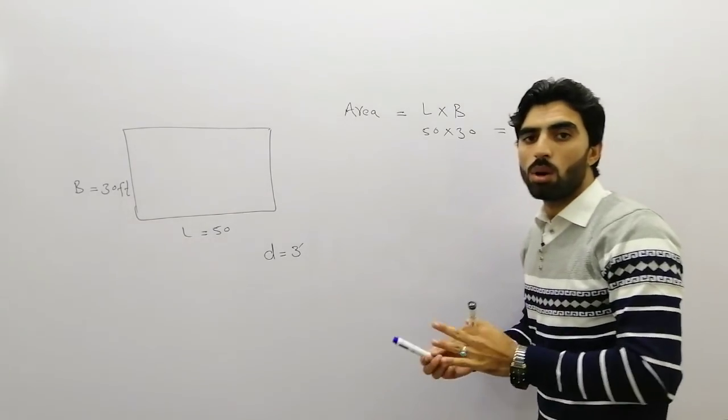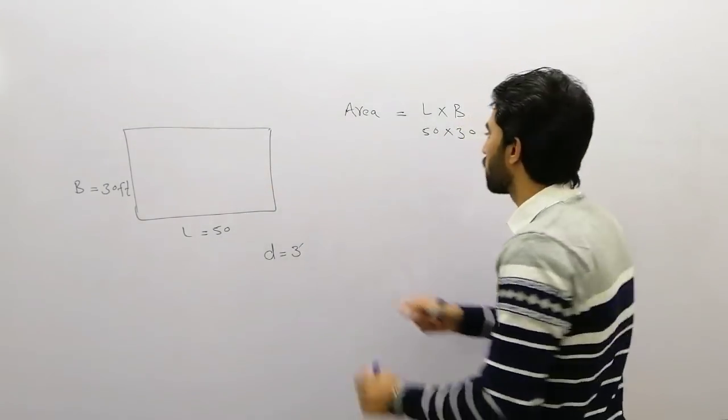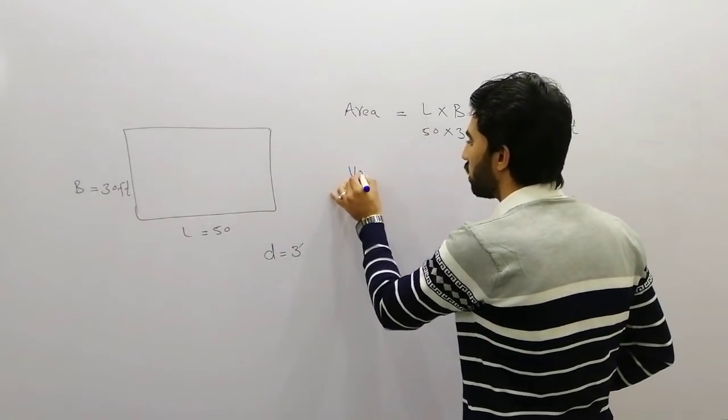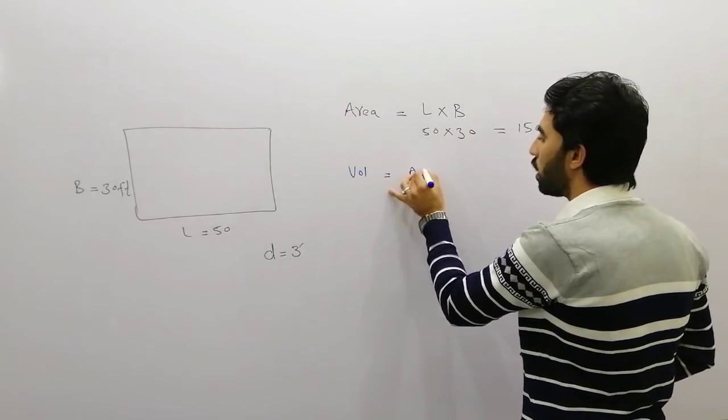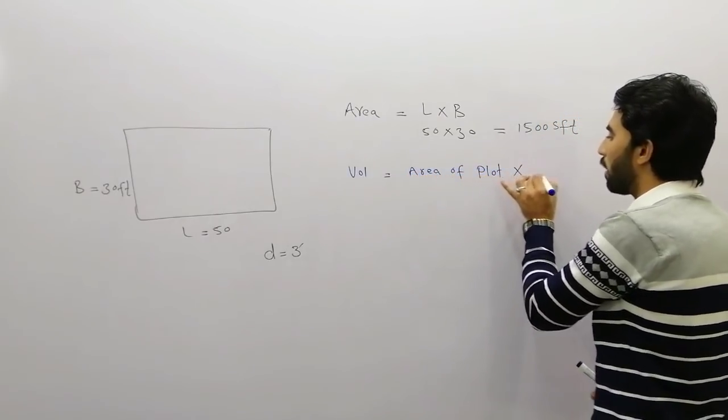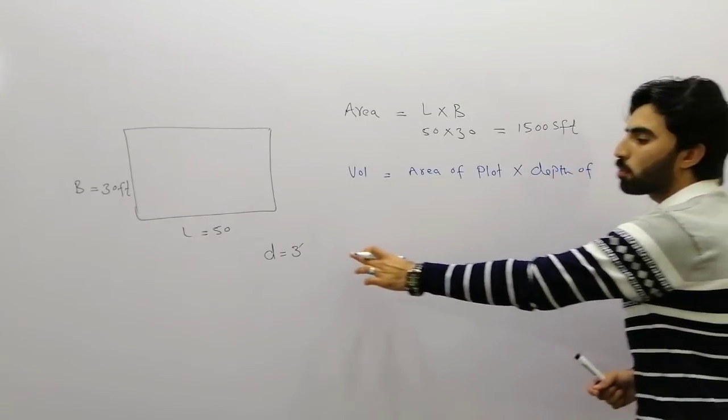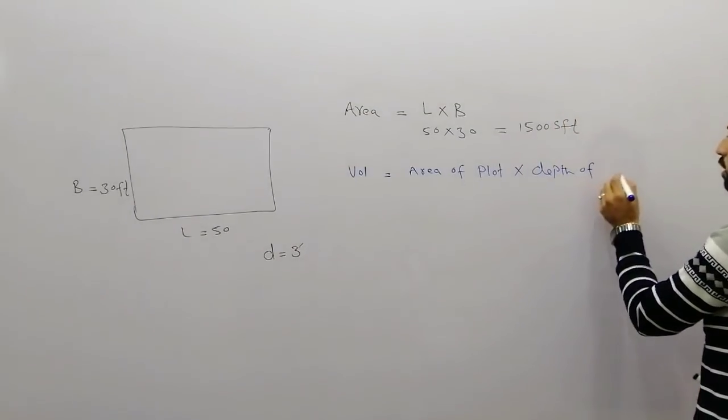Now we need the total volume of material requirement for filling this plot. So now we need the volume. Volume is equal to area of plot multiplied by depth of filling.